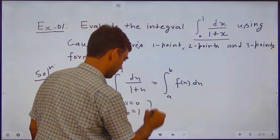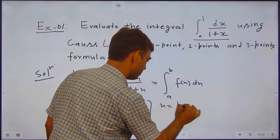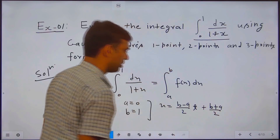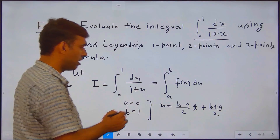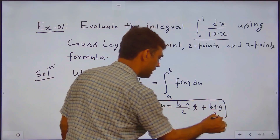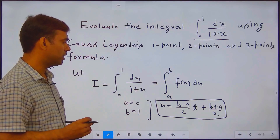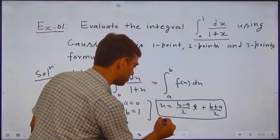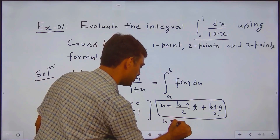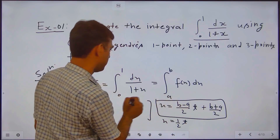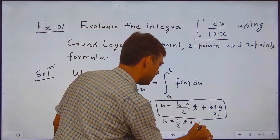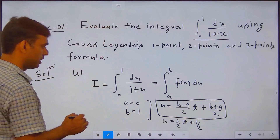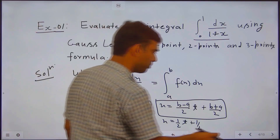To convert the given integration into standard form, we use the transformation x = (b minus a)/2 · t + (b plus a)/2. As discussed earlier, this transformation converts any general integration whose lower and upper limits are a and b into the standard form with limits minus 1 to 1. Here, a = 0 and b = 1, so x = (1/2)t + 1/2.